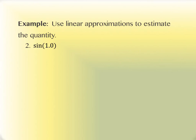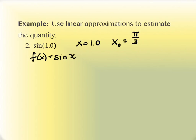Let's take a look at another one. This time it's the sine function, not the square root. Our function f(x) = sin(x). Now 1.0 is the x value we want to find the function at — that's not a standard unit circle value in radians, but it's actually very close to π/3. So the x₀ value of π/3 is approximately equal to 1, and we can use our unit circle knowledge to find values for the sine function there.